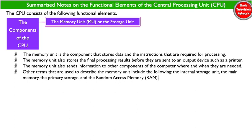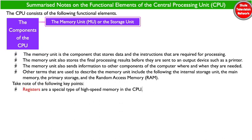Other terms used to describe the memory unit include the internal storage unit, the main memory, the primary storage, and the random access memory. Take note of the following key points: registers are a special type of high-speed memory in the CPU.